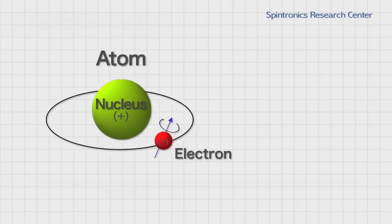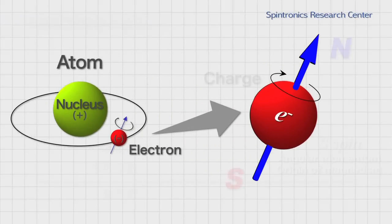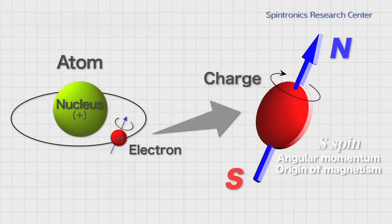The electron has spin and charge. In Spintronics, we study and try to utilize the spin degree of freedom. In some cases, we study and utilize just the spin degree of freedom. And in other cases, we study both the spin degree of freedom and the charge degree of freedom combined.